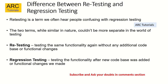What is the difference between retesting and regression testing? These two terms are often confused. Retesting means testing the same functionality again without any additional code base or functional changes — there is no code change, it's the same code base, you are just testing it again. Whereas regression testing means there was an addition or removal of code — basically a code base change — and then you are testing to make sure that everything is working as expected. That is called regression testing.